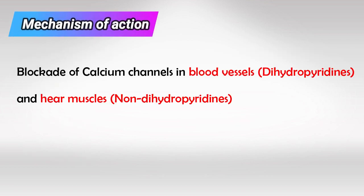Calcium causes contraction of the blood vessels and the heart. The dihydropyridine group blocks the calcium channels in the vessels, so it decreases the vascular resistance and decreases blood pressure. The non-dihydropyridine group blocks calcium channels in the heart and decreases heart contraction.